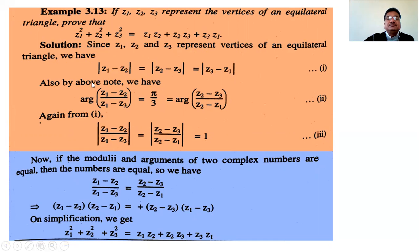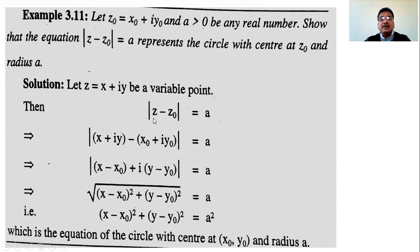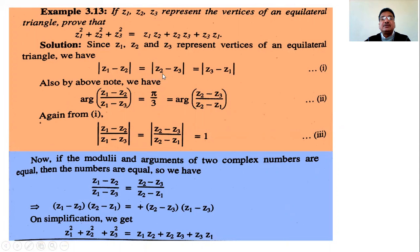|z1 - z2| represents the distance between z1 and z2. If z1 = x1 + iy1 and z2 = x2 + iy2, then |z1 - z2| = √((x1-x2)² + (y1-y2)²), which is the distance formula. So |z - z0| gives the distance between z and z0.